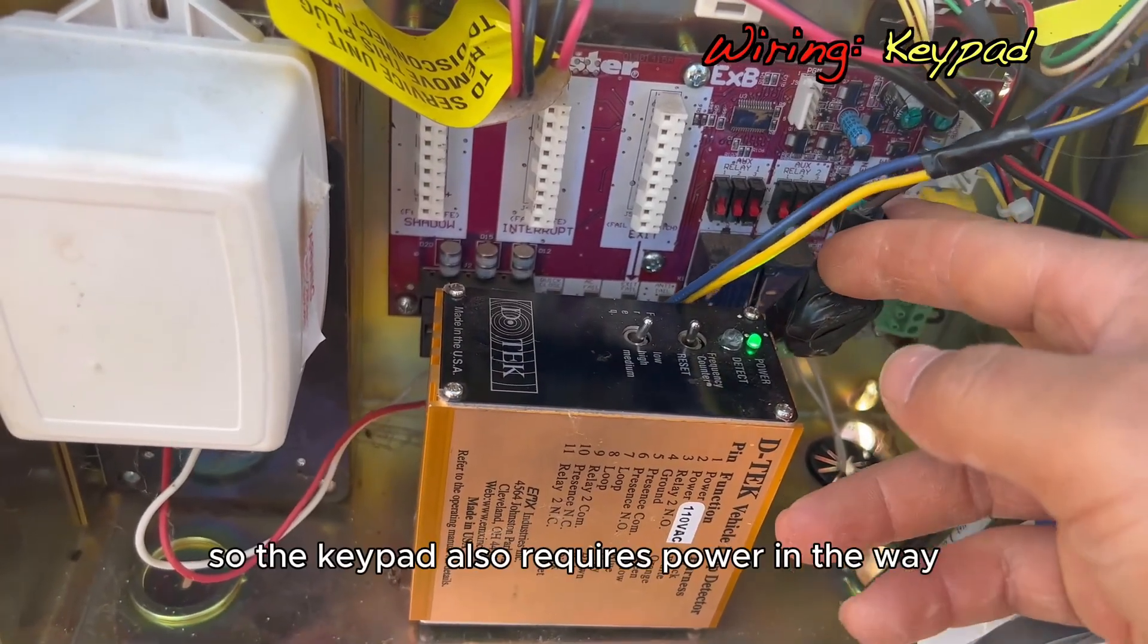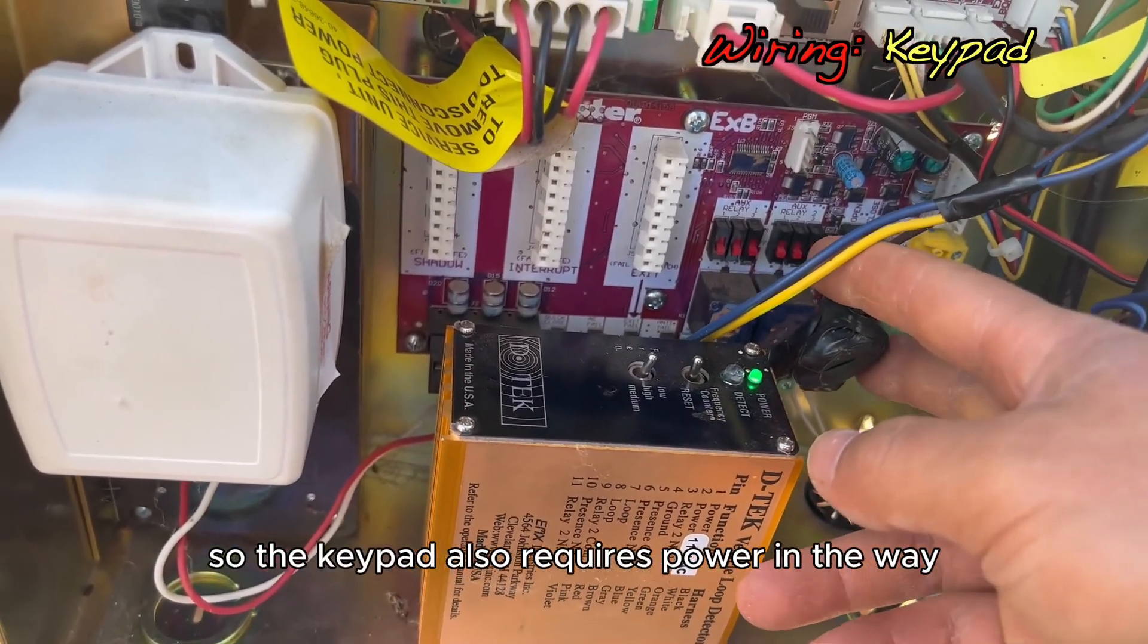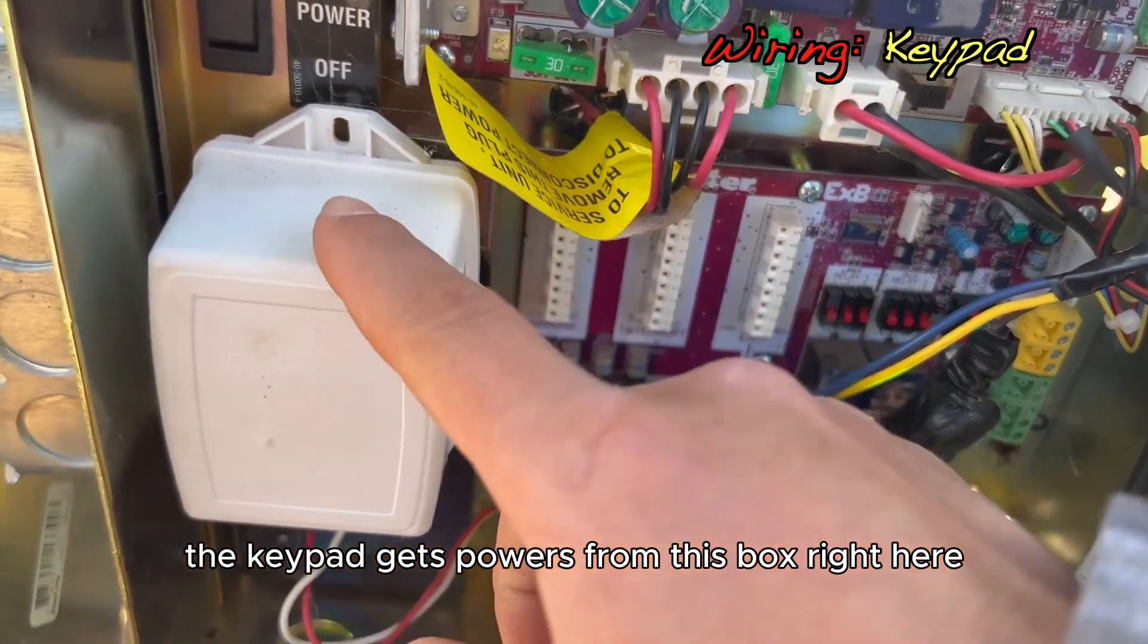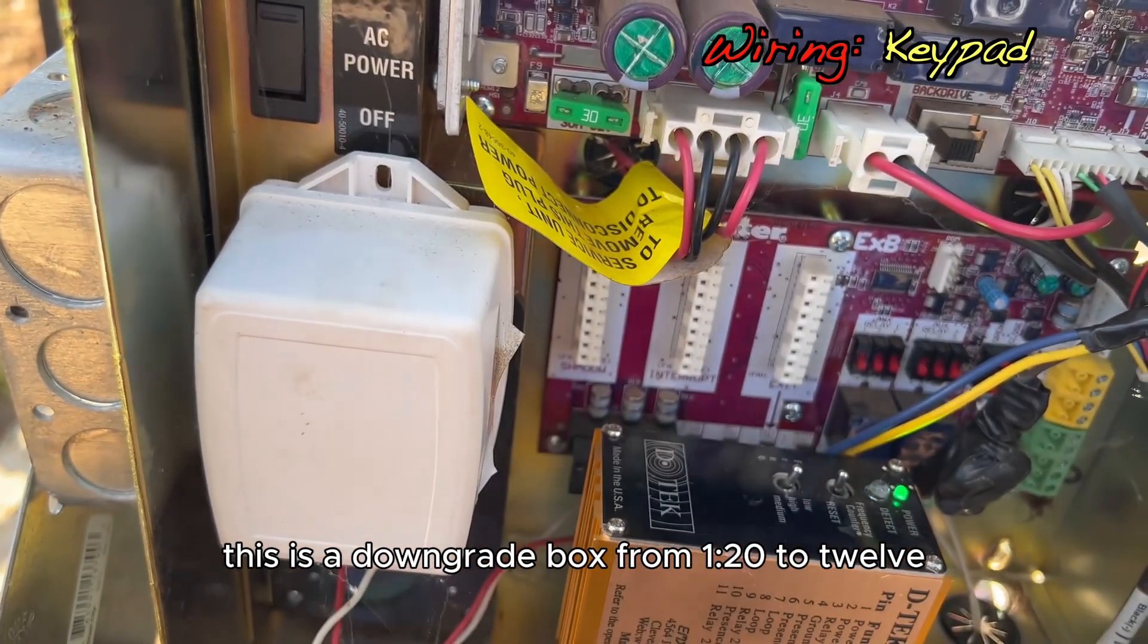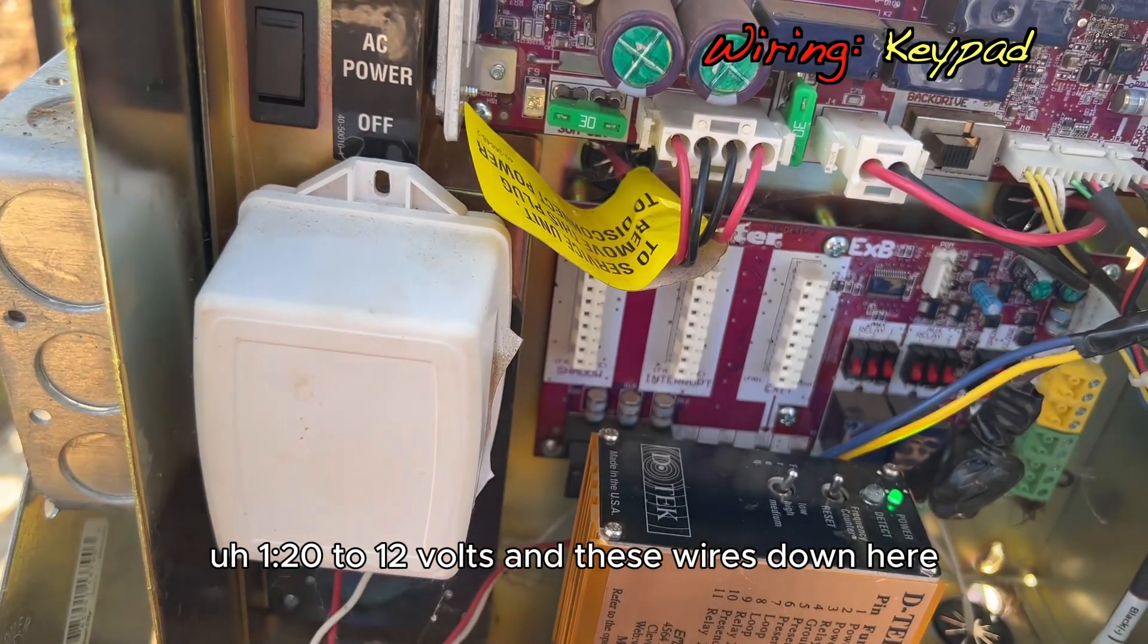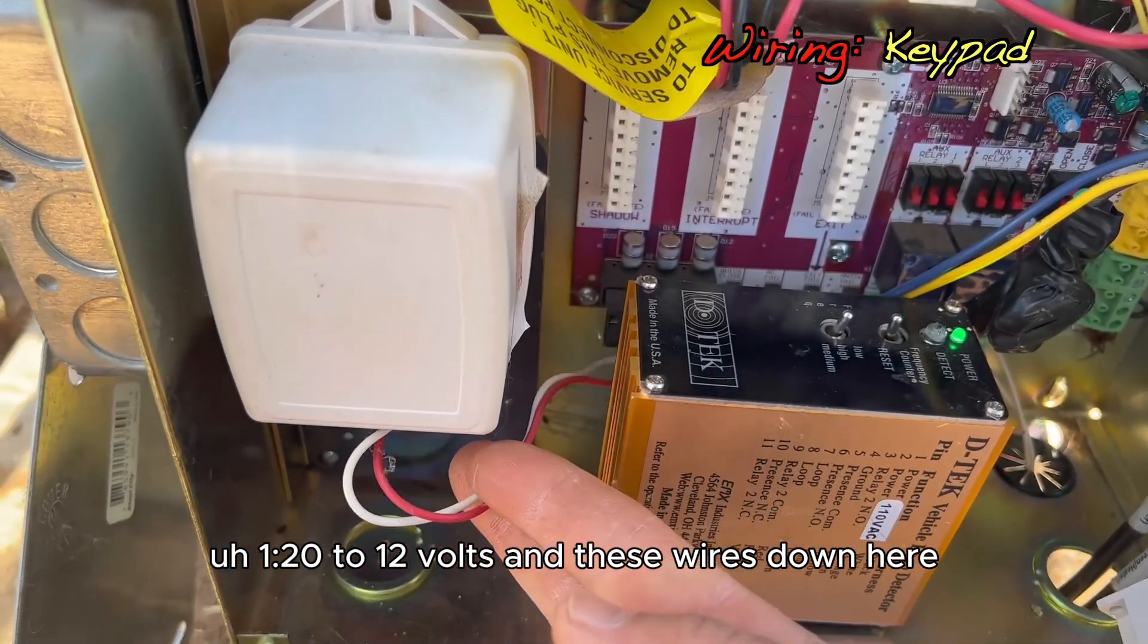So the keypad also requires power, and the way the keypad gets power is from this box right here. This is a downgrade box from 120 to 12 volts, and these wires down here, these are 12 volt wires.